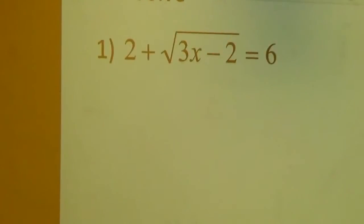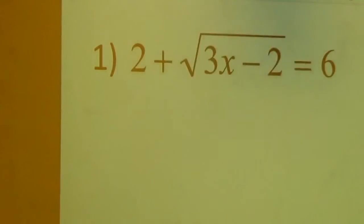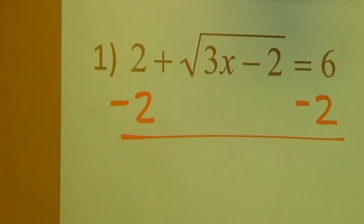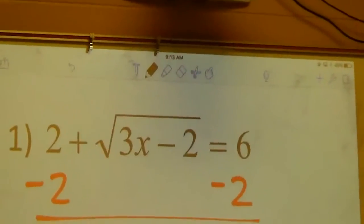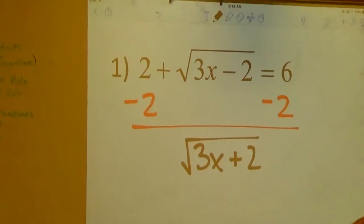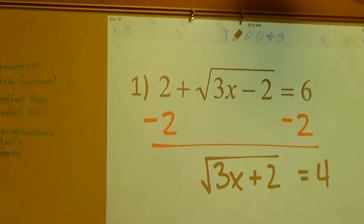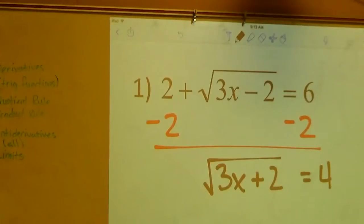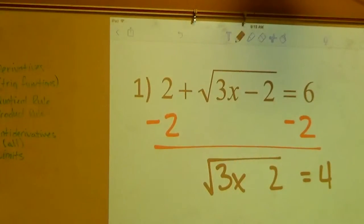Let's look at number 1. Step 1: isolate the radical — I want to get this entire piece by itself. What am I doing? Subtract 2 from both sides. Wait — it was minus 3, not minus 2. Oh, thank you — I was confused about which one you were talking about.